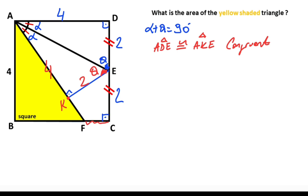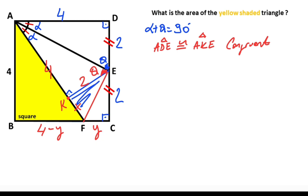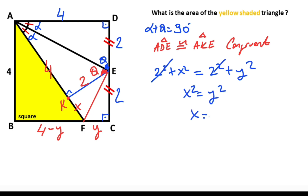Next step: let's call this length y, so four minus y is left here. And let's call this part x. If we connect point E and point F, x and y must be equal. Why? Because if you focus on this triangle, two squared plus x squared must equal two squared plus y squared, so x must equal y.